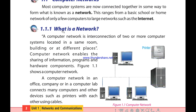A computer network is the interconnection of two or more computer systems located in the same room, building, or at different places. Computer network enables the sharing of information, programs, and hardware components. Figure 1.1 shows a computer network. It shows us a small computer network with a printer attached to it.